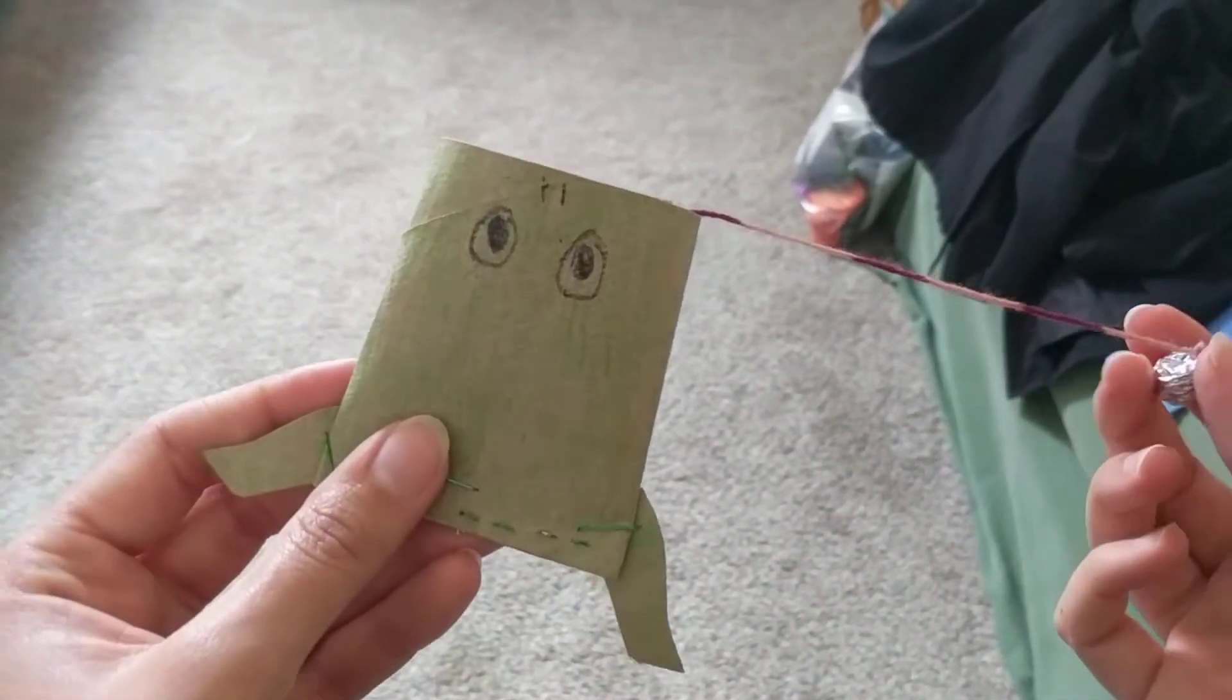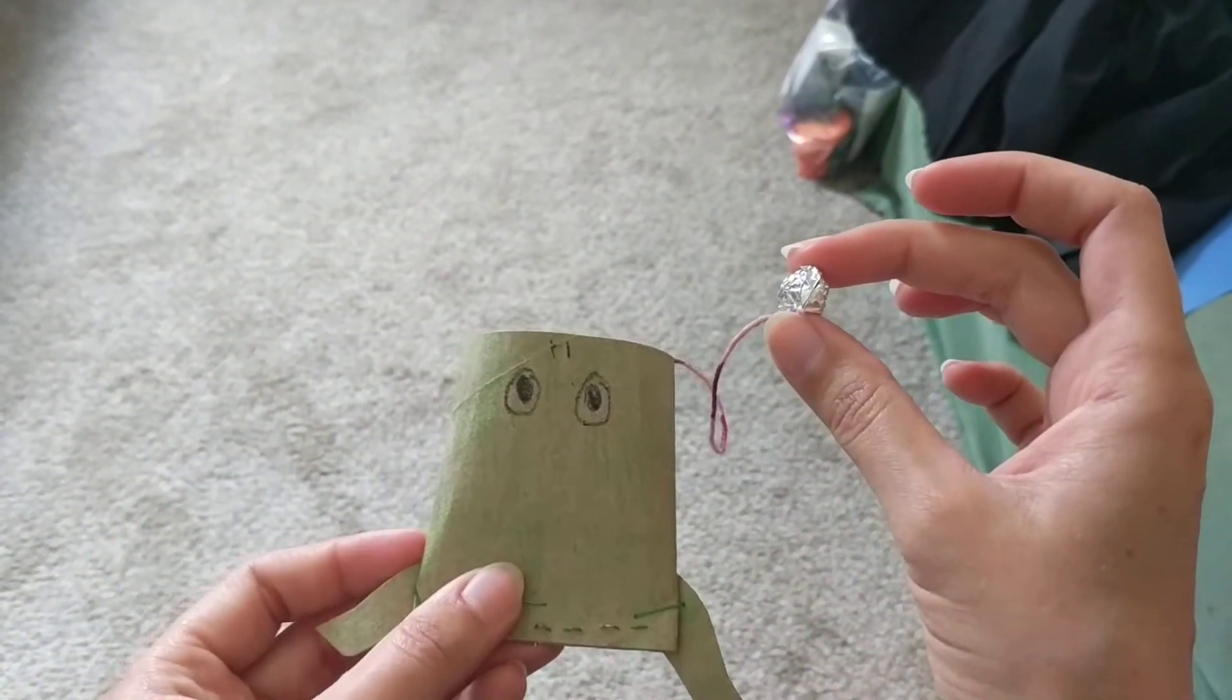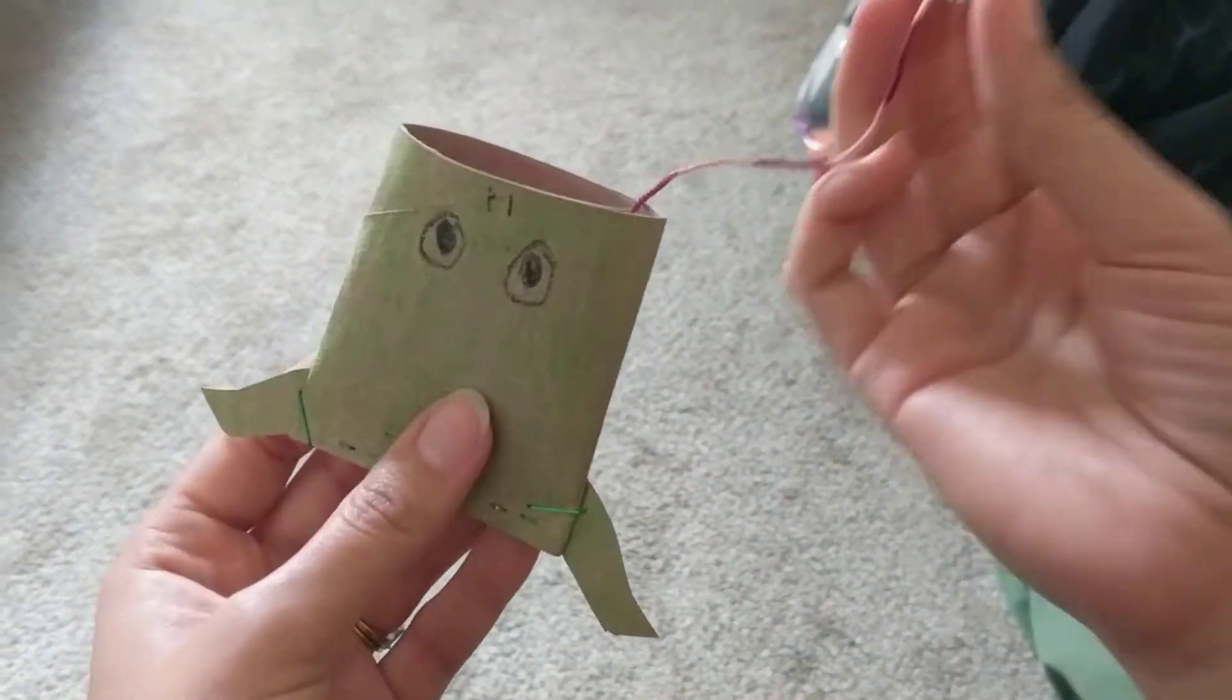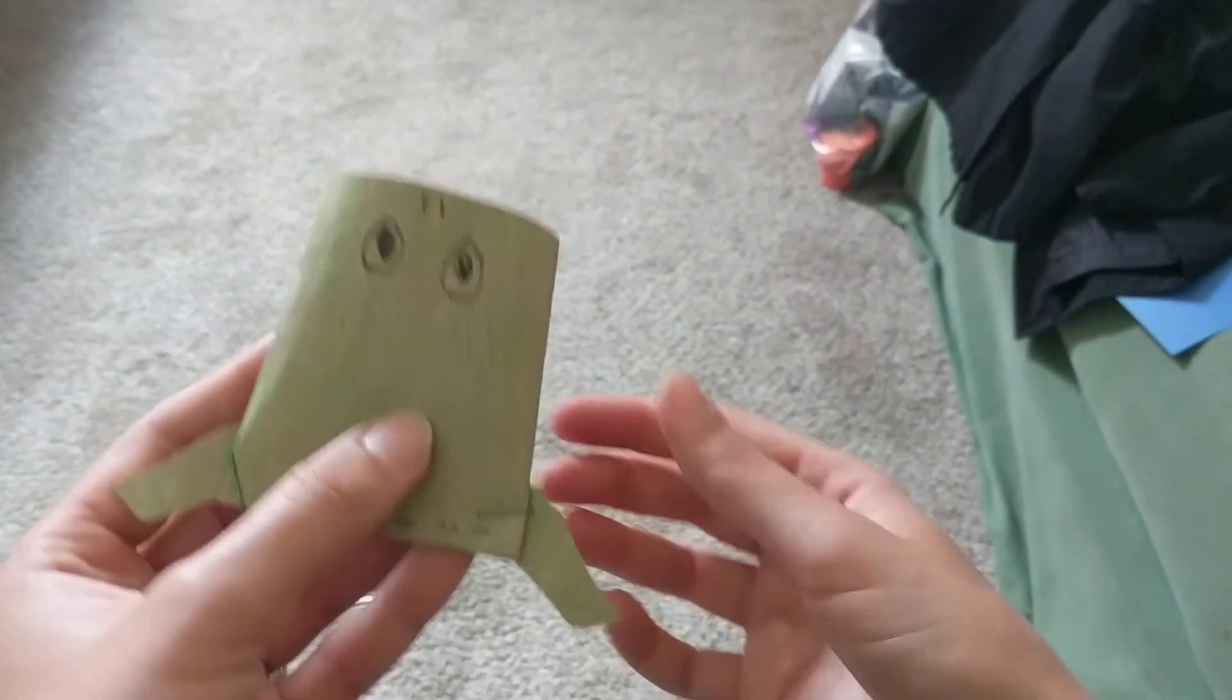Hello everybody! Today on Recycled Crafts with Miss Echo we're going to show you how to make this fun little frog game where the object of the game is to catch the fly that's stuck on the tongue of the frog in the frog's mouth.